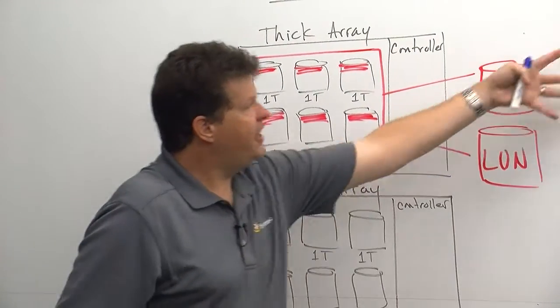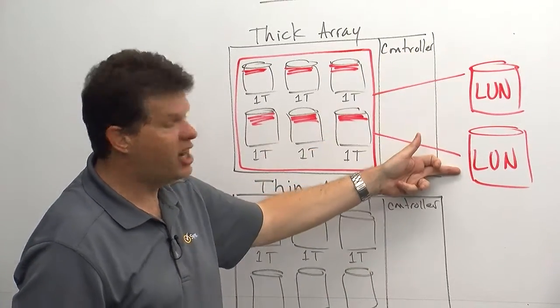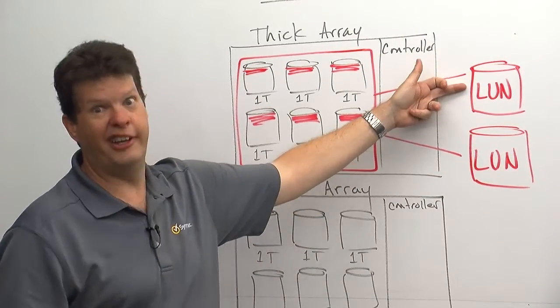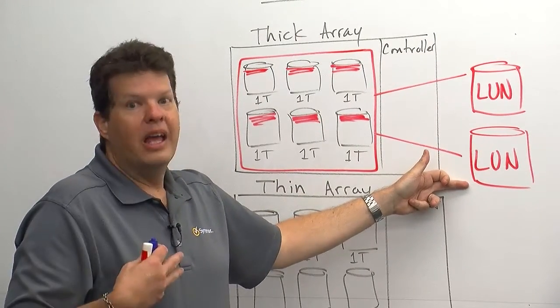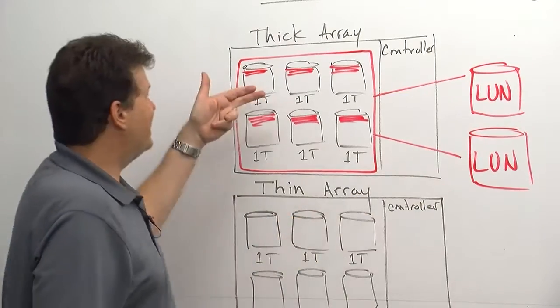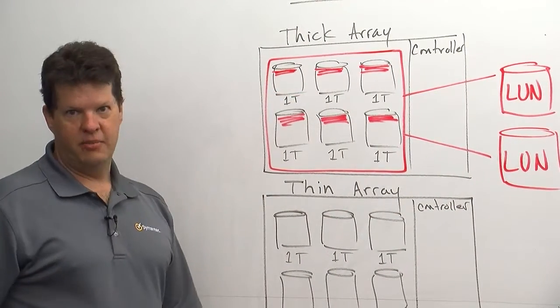Well, I give these to my groups that request these, and I may have a terabyte LUN here and a terabyte LUN here. One group uses 100 gigs in this one. The other group fills this up and wants more. Well, now, can I give them more? It's based on how much disk space I have available here. That's where thin provisioning comes in.